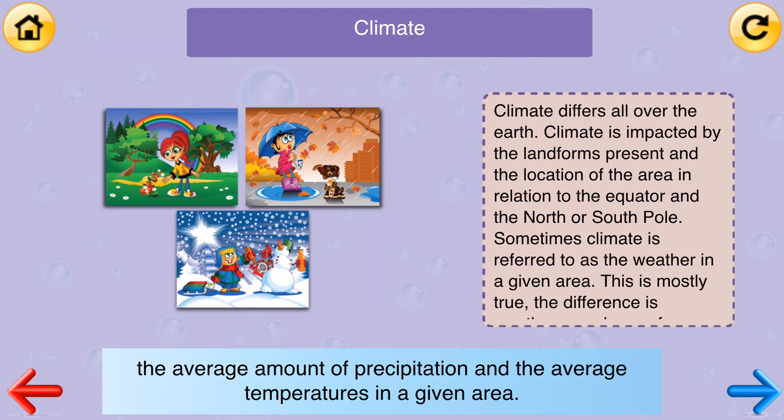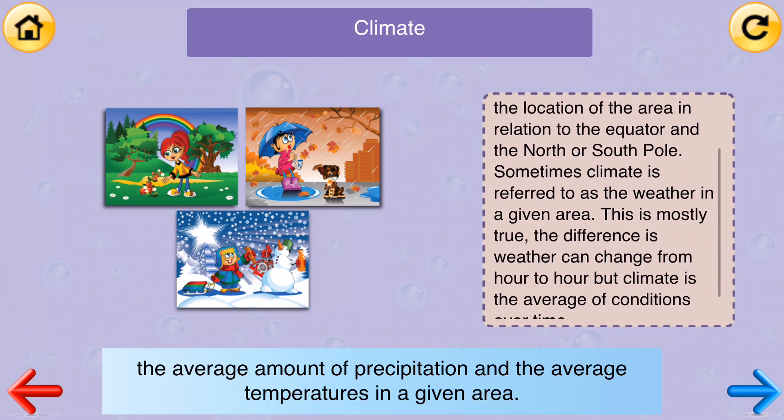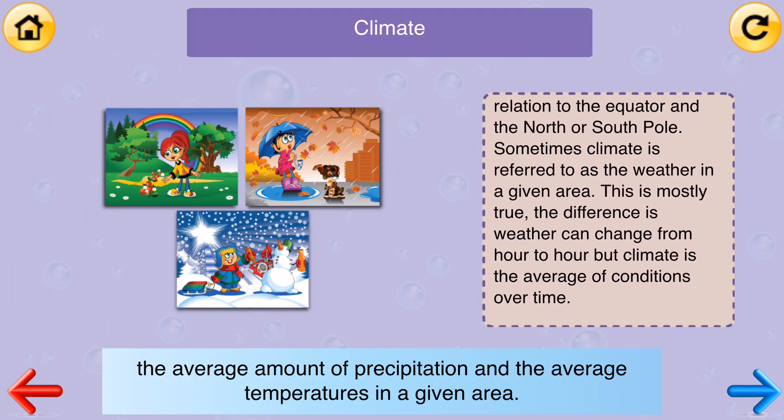Climate: the average amount of precipitation and the average temperatures in a given area. Climate differs all over the earth. Climate is impacted by the landforms present and the location of the area in relation to the equator and the north or south pole. Sometimes climate is referred to as the weather in a given area. This is mostly true. The difference is weather can change from hour to hour, but climate is the average of conditions over time.